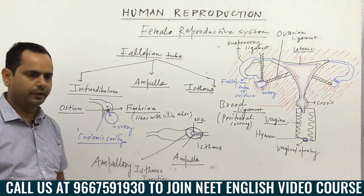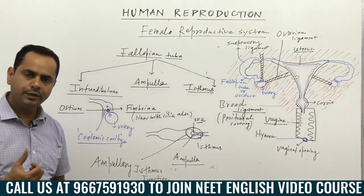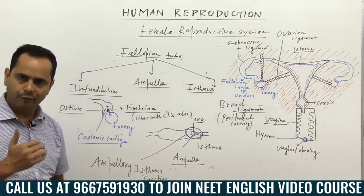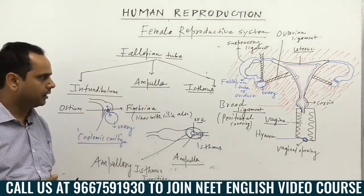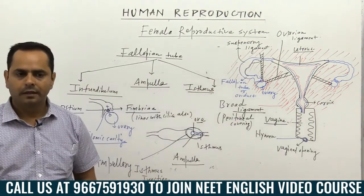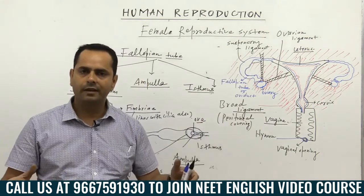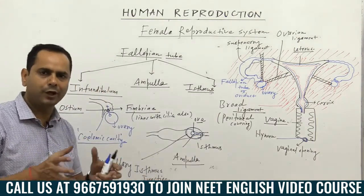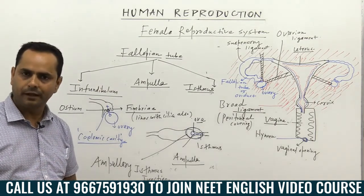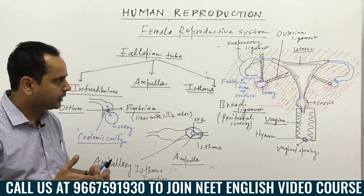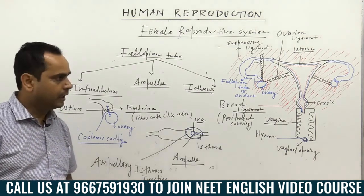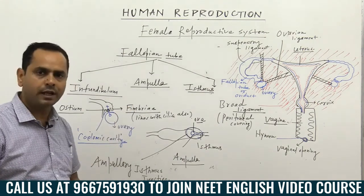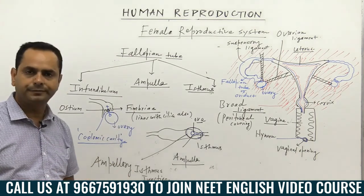In summary, the fallopian tube receives the ovum from the ovary after ovulation, transports it to the ampullary-isthmus junction where fertilization takes place, and is also the site of zygote formation. The zygote formed in the fallopian tube undergoes initial development, and the embryo then enters the uterine cavity for further development. Next, we will look at the structure of the uterus.